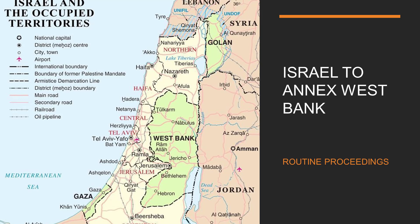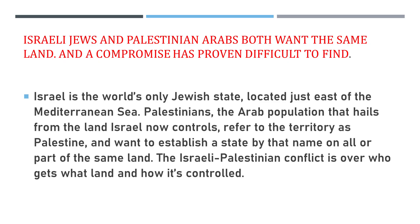The Israel-Palestine conflict is primarily a conflict of two religions: Islam and Judaism. In early 1900, the entire Middle East was under the Ottoman Empire. Muslims, Christians, and a small number of Jews lived in peace.